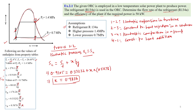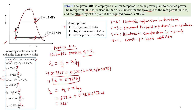Once we know the dryness fraction, we can find the enthalpy at state 2 using H2 = Hf + x·Hfg. So H2 = 88.82 + 0.9836 × 176.26 = 262.24 kJ/kg.